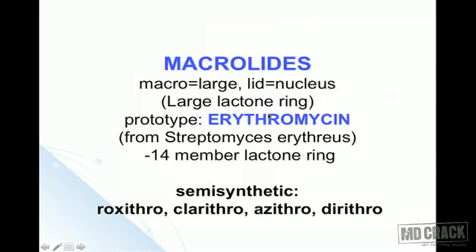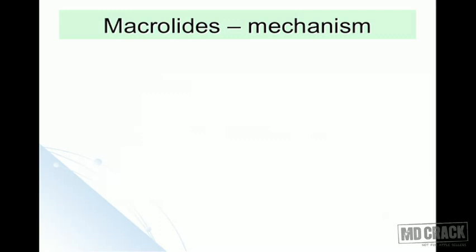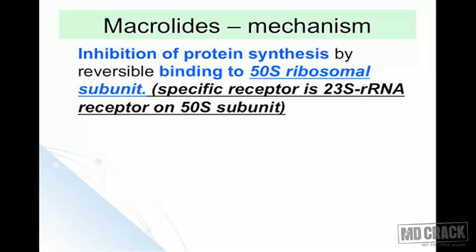Macro means large and lid means nucleus — these drugs have a large lactone ring, hence they are called macrolide antibiotics. The prototype is erythromycin, originally obtained from Streptomyces erythreus, and it has a 14-membered lactone ring. Semi-synthetic macrolides that came later include roxithromycin, clarithromycin, and azithromycin.